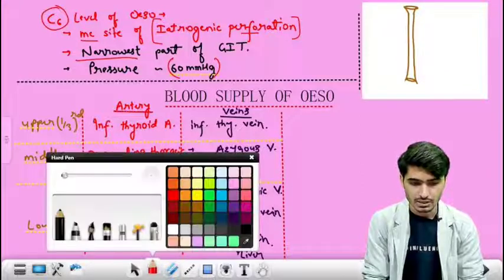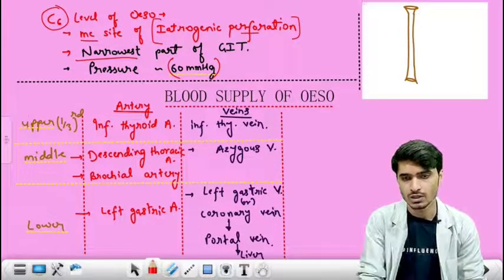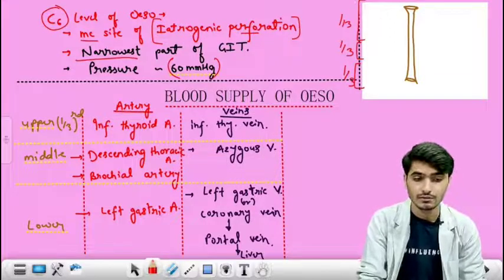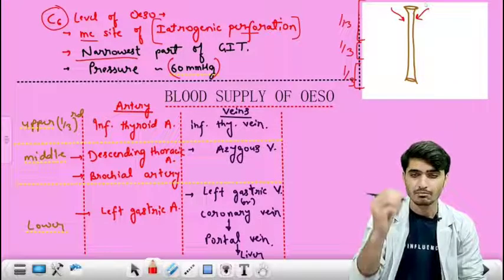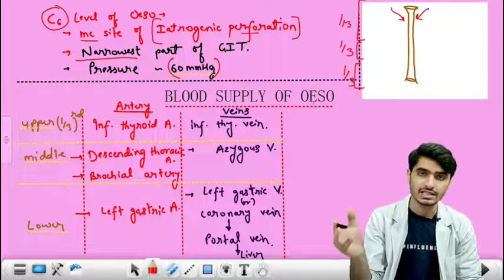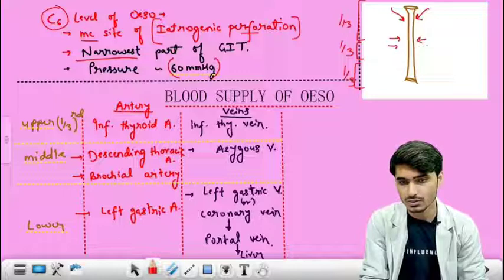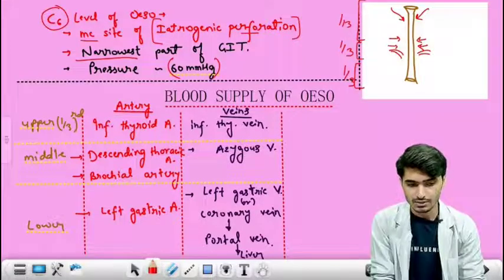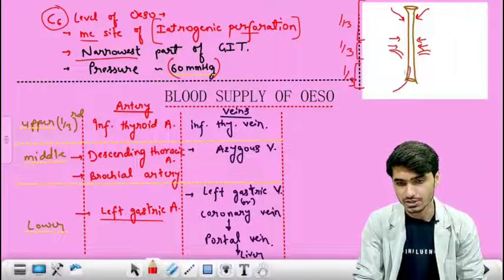Now we will discuss the blood supply of the esophagus, which has three zones — upper, mid, and lower. In the upper third, it is supplied by the inferior thyroid artery. In the middle third, it is supplied by direct branches from the descending thoracic aorta, including bronchial arteries from each side. The lower third is supplied by the left gastric artery.